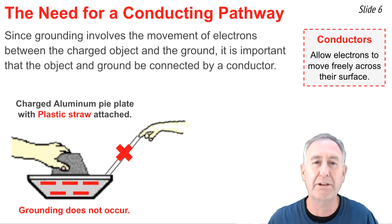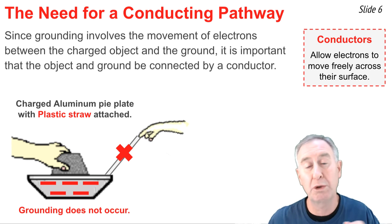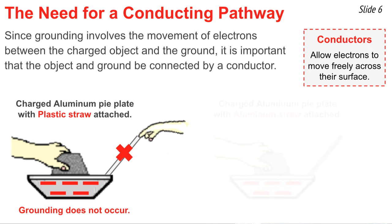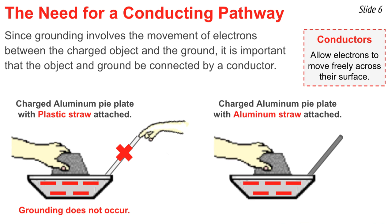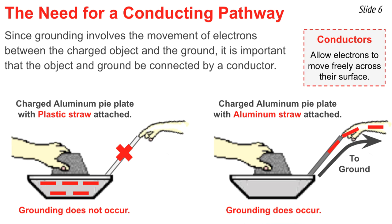We would need a conducting pathway from the aluminum pie plate to the ground or the finger. In this diagram, we happen to see that the plastic straw is covered with aluminum, wrapped in aluminum, in such a matter that it's now a so-called aluminum straw. And when you touch the end of the aluminum straw, it provides the conducting pathway that you need to transfer electrons from the charged object to the ground.